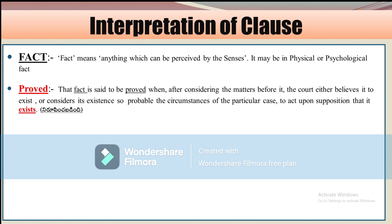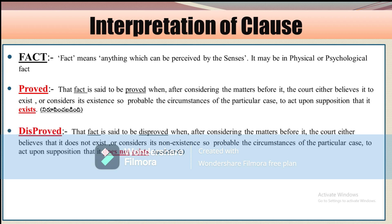Next is 'Proved.' A fact is said to be proved when, after considering the matters before it, the court either believes it to exist or considers its existence so probable given the circumstances of the particular case that it acts upon the supposition that it exists. Next is 'Disproved.' A fact is said to be disproved when the court believes the fact does not exist. So: if the fact exists, it is proved; if the fact does not exist, it is disproved.